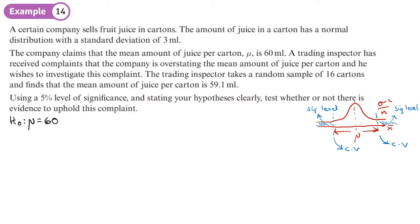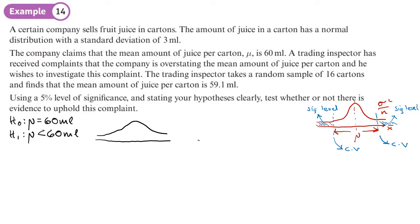The question states the mean is normally 60 millilitres — that's H0. People are complaining it's lower than that, so H1 is that the mean is less than 60 millilitres. We want to find out if the mean has changed, and I'm going to show you two different ways to answer this question — you just choose one or the other.